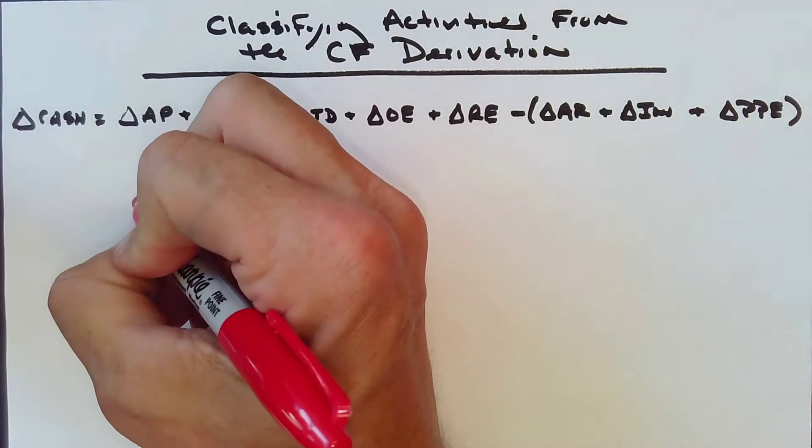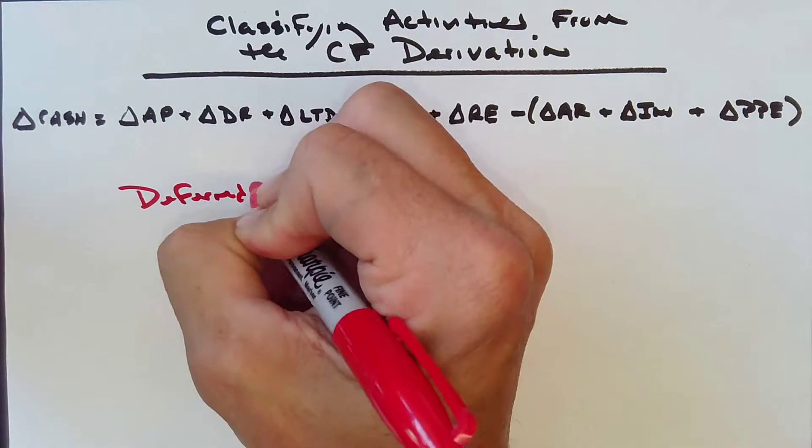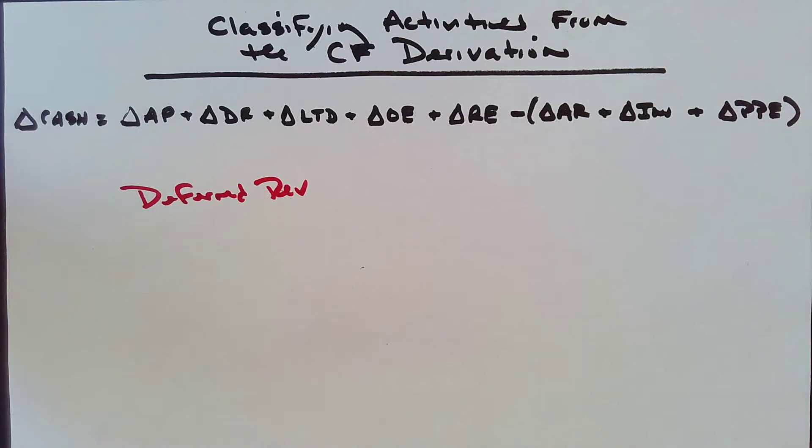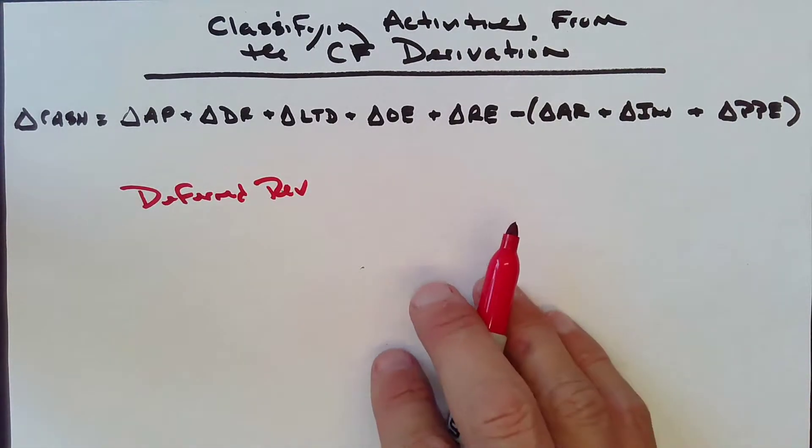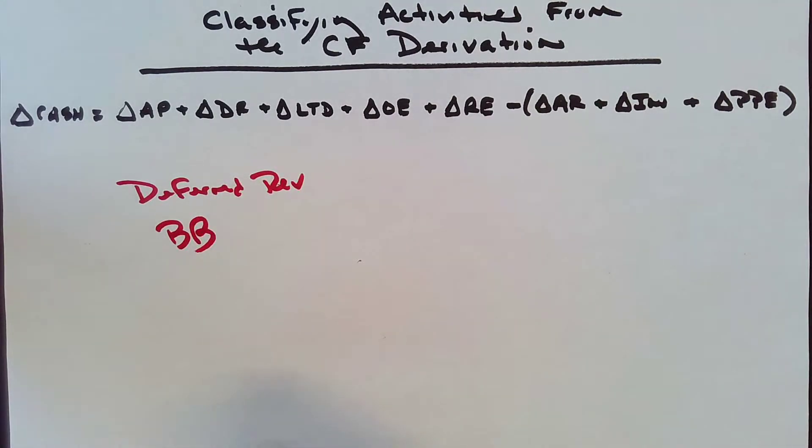Let's look at Deferred Revenue. Any Deferred Revenue account is always going to follow this pattern of behavior. So we've got our beginning balance, and we've got our ending balance.